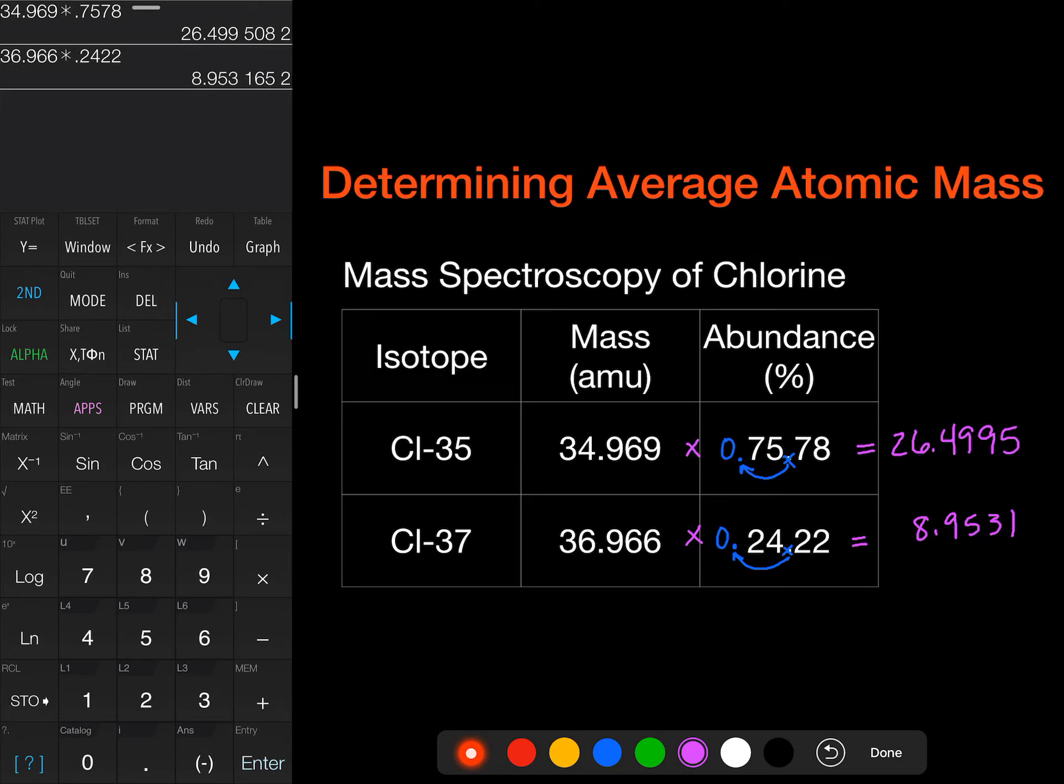I'm just going to keep that value in there and add. I want to add, not multiply. Add our first number, 26.4995, and I end up getting 35.45. So I'm adding these numbers together to get the 35.45 AMU.